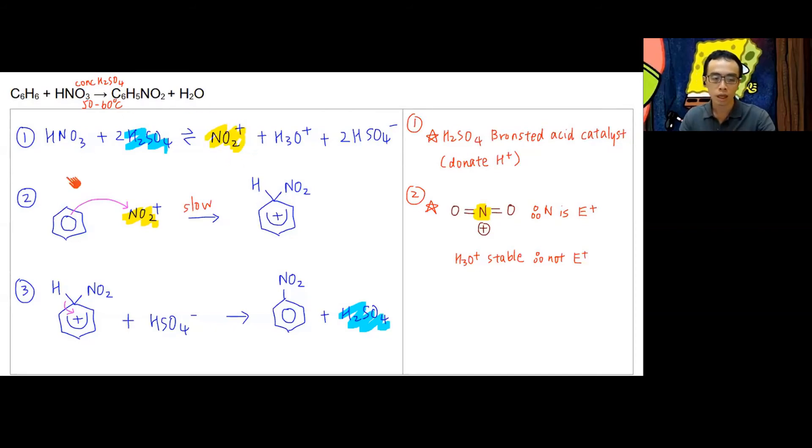The second step, my benzene will attack the NO2+. Maybe some of us might wonder, H3O+ also has a positive charge—can it be the electrophile? I've mentioned this here: H3O+ is relatively more stable than my NO2+, so therefore H3O+ is not involved. It doesn't function as the electrophile.